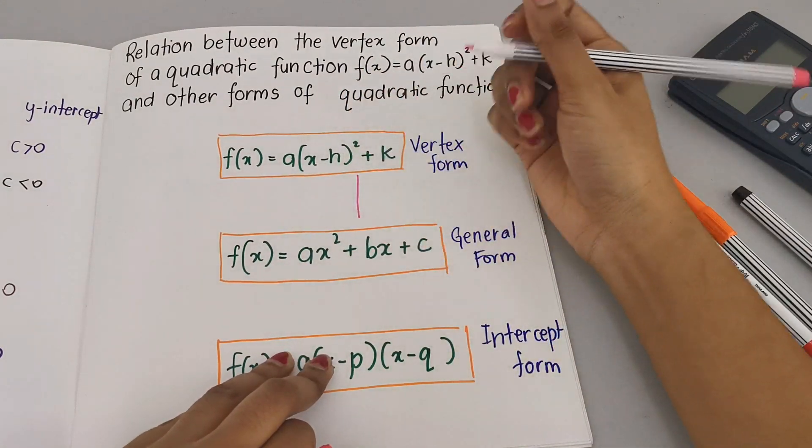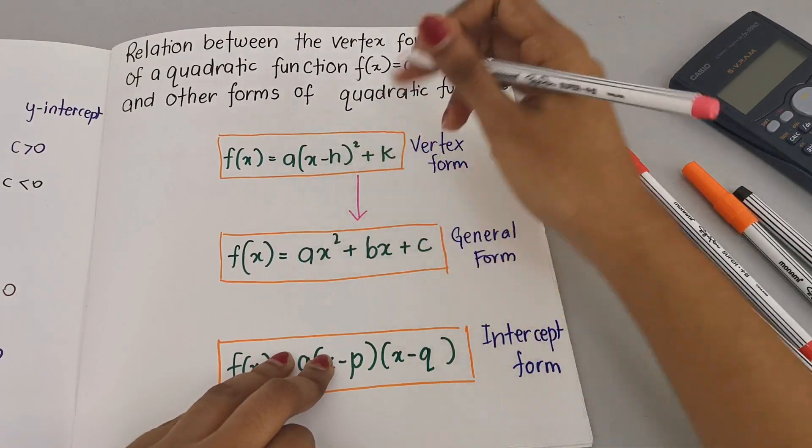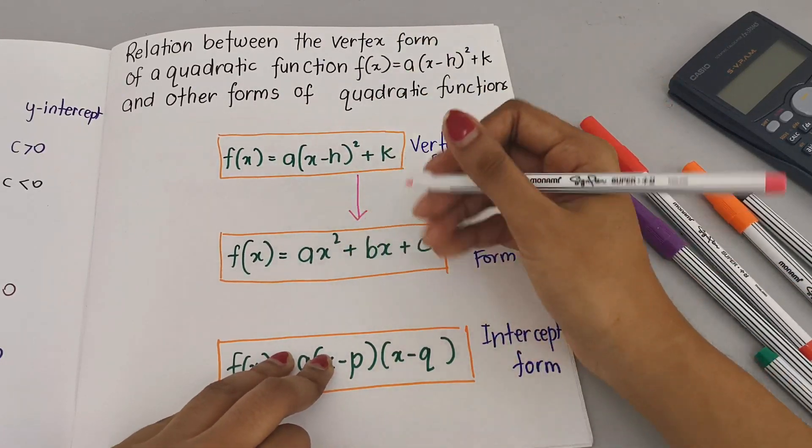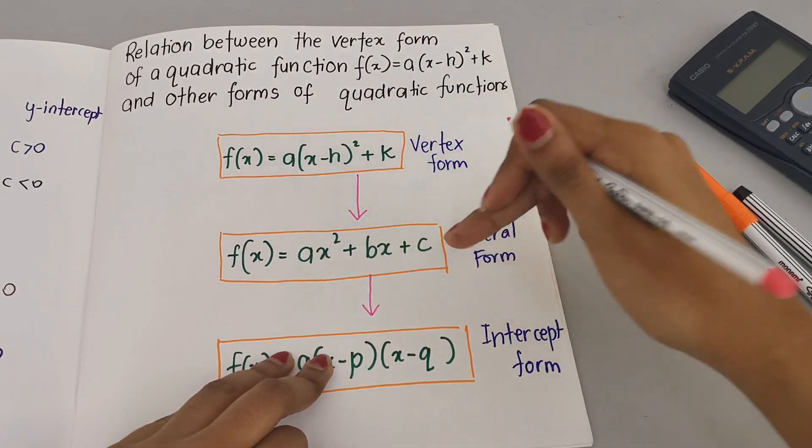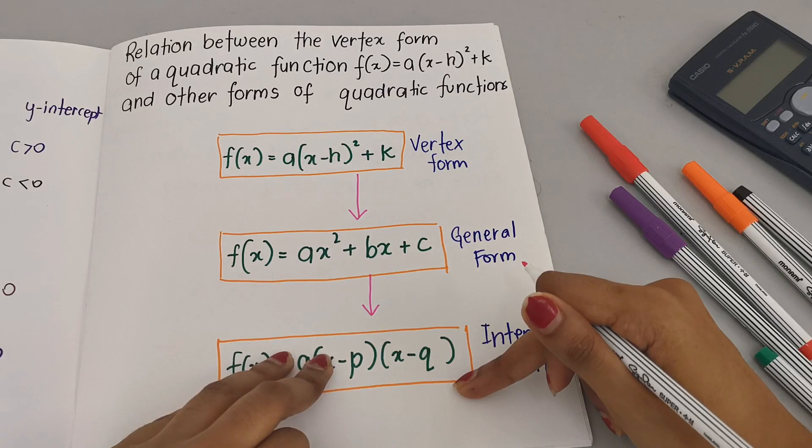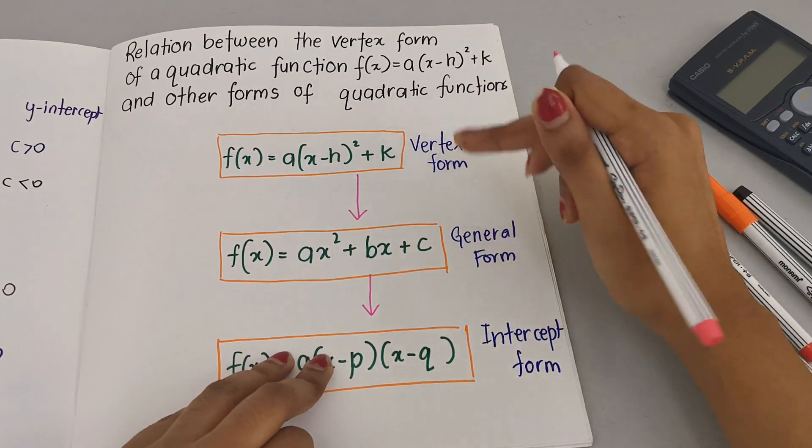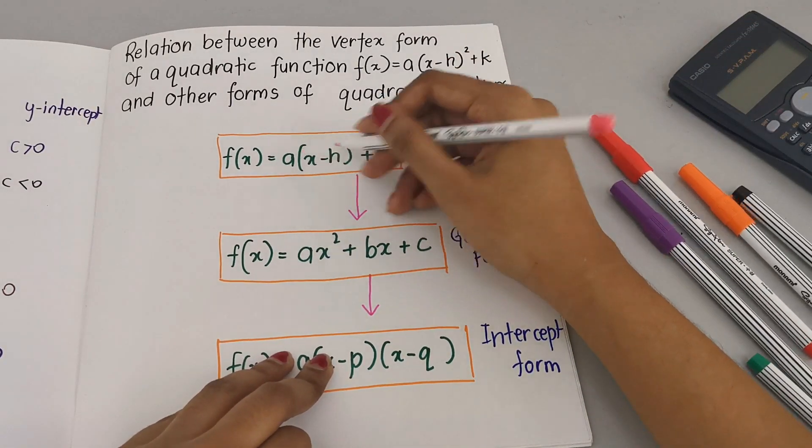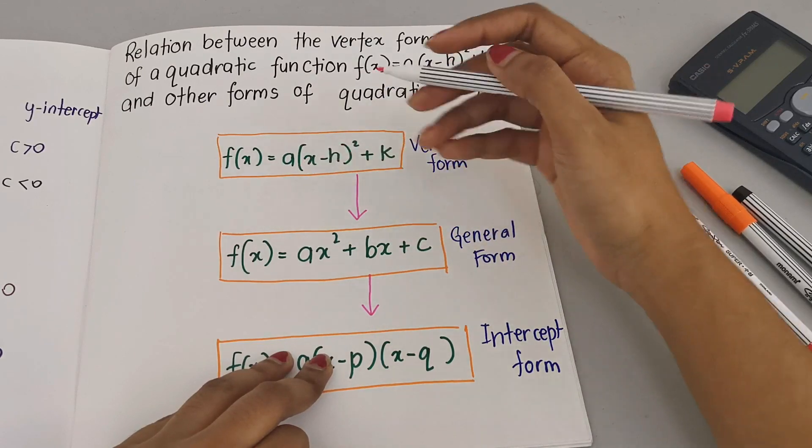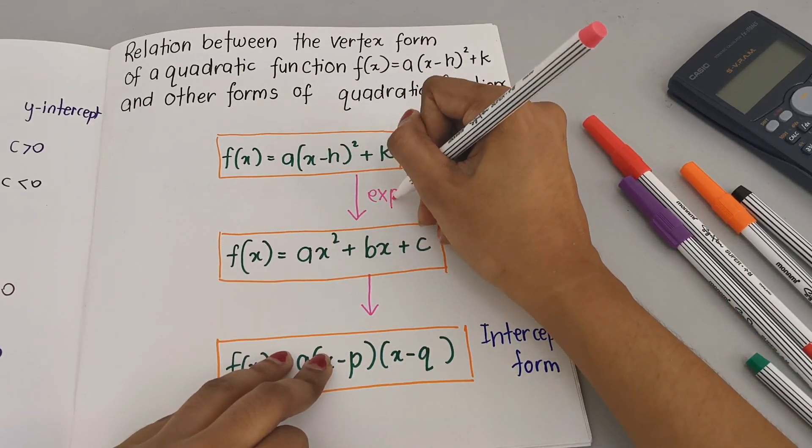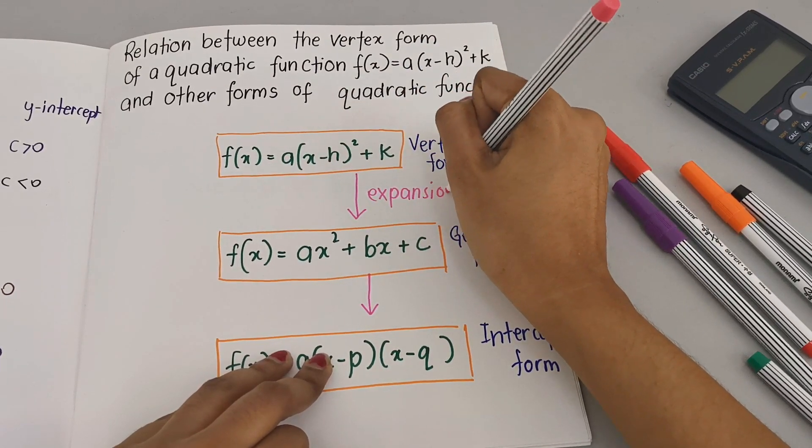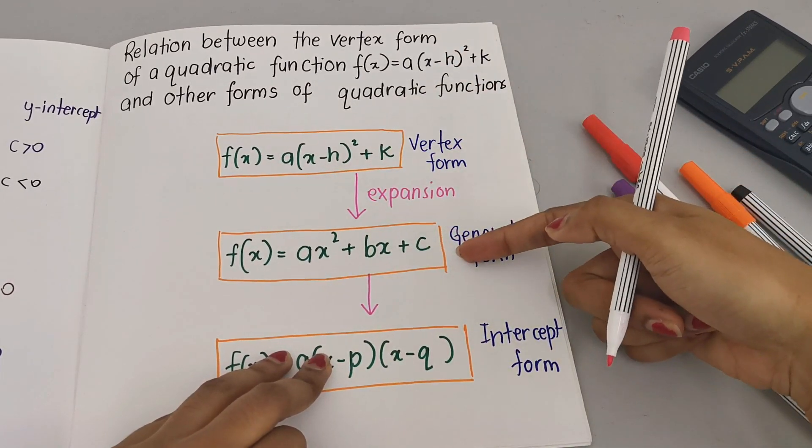First, vertex to general: if our format is in vertex form, we need to use expansion to get the general form. If it's in general form and we want to go back to vertex form, we need to use completing the square.